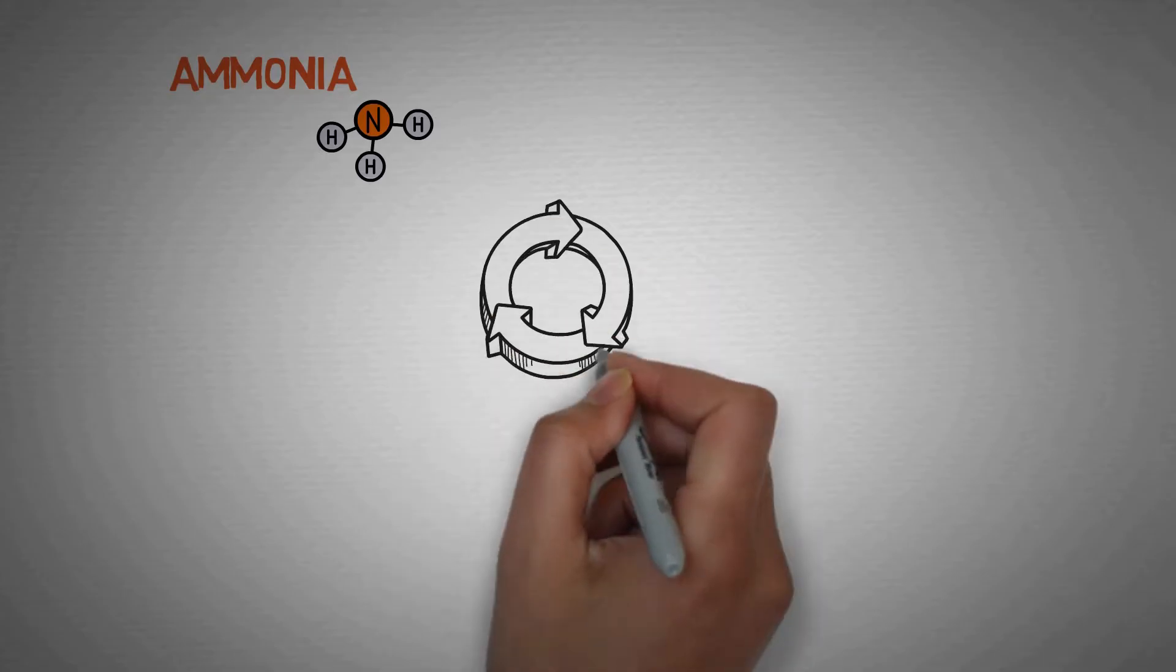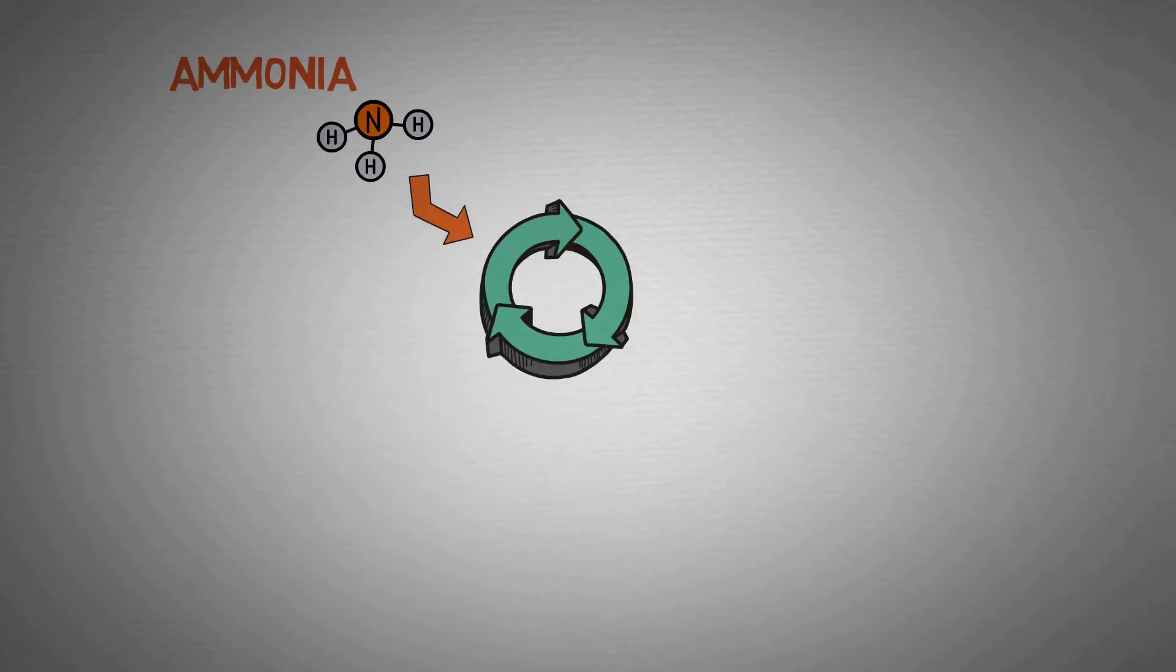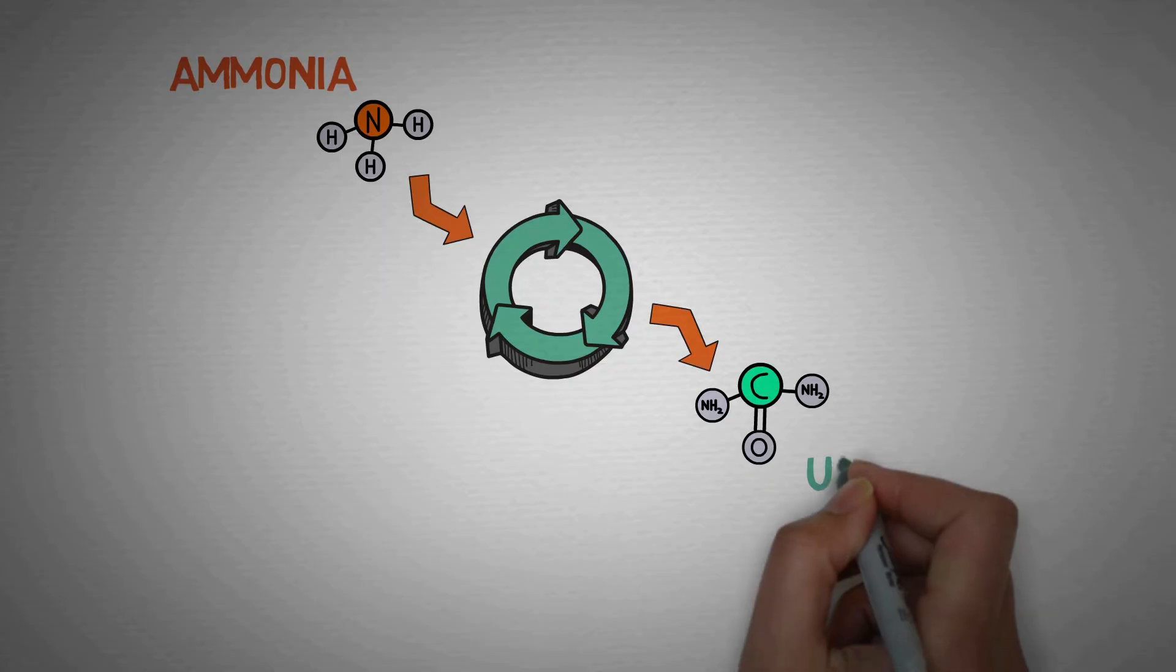The urea cycle is a biochemical pathway that runs in our body and does the main job of converting ammonia to urea.